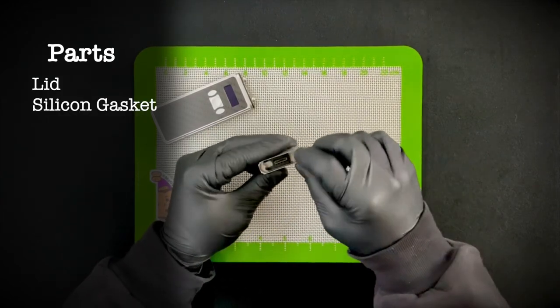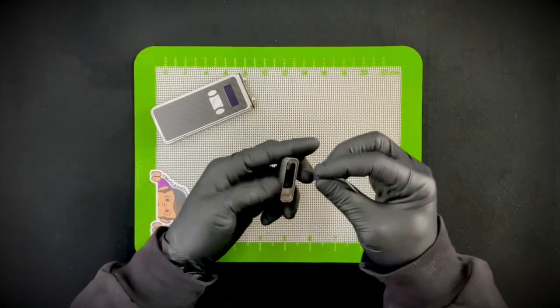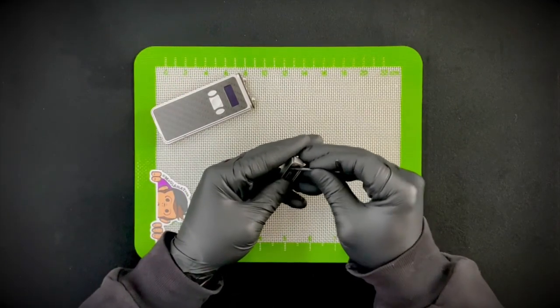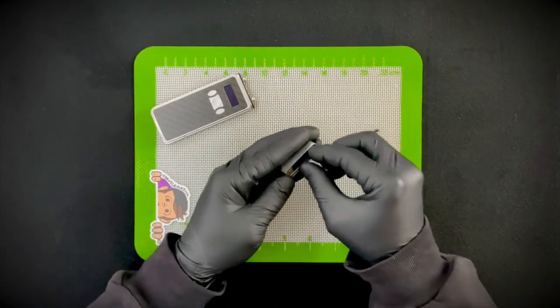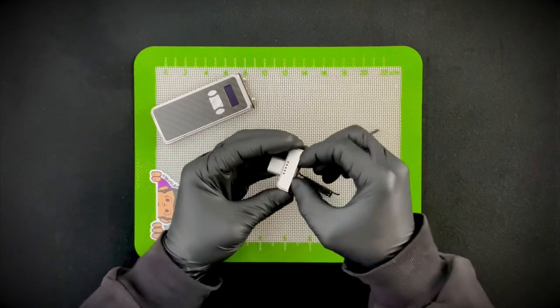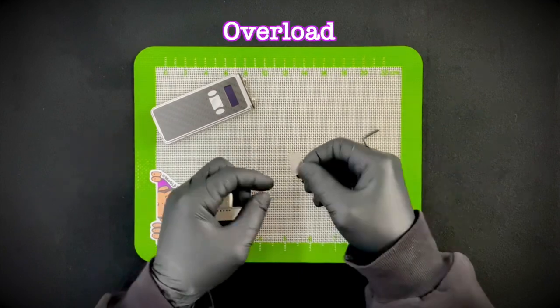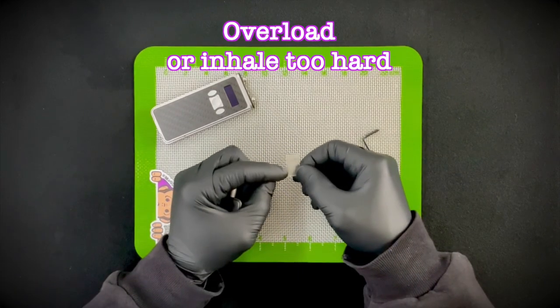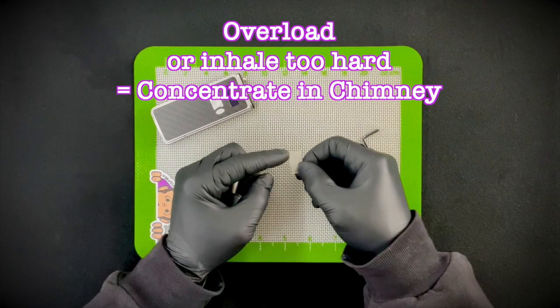Inside the lid you have this silicone gasket and a glass chimney. This is one of the few things on the Cricket that you'll have to clean. You'll just lift up this tab on the silicone, pull this gasket out, grab this little glass chimney out of there. If you overload the Cricket or inhale too hard, you'll sometimes get concentrates up in here.